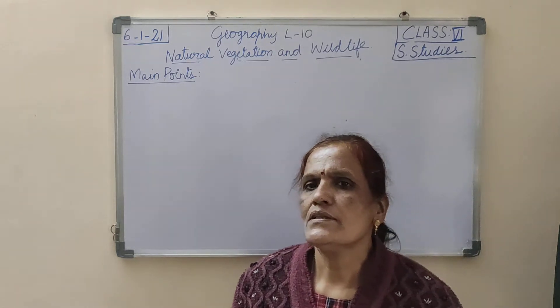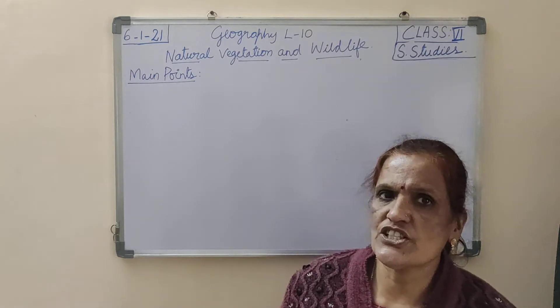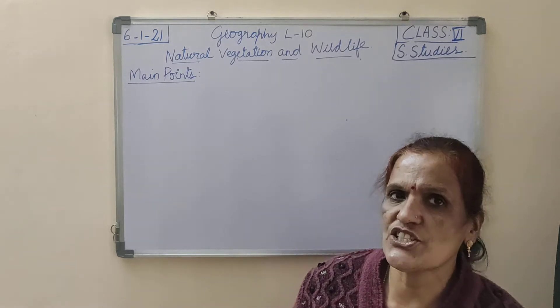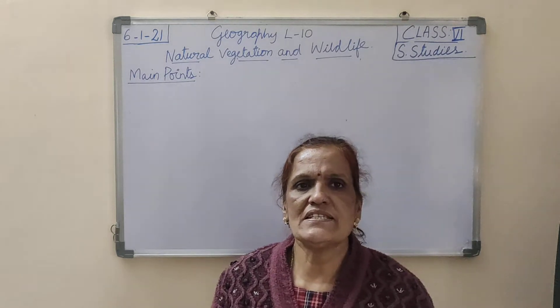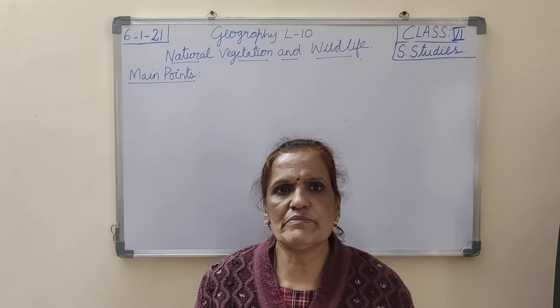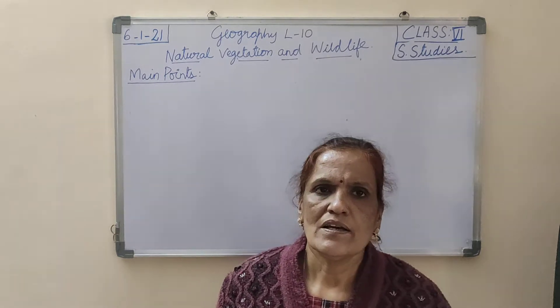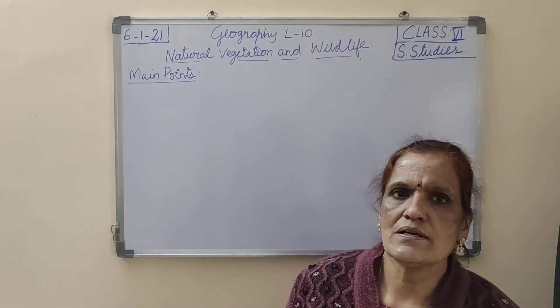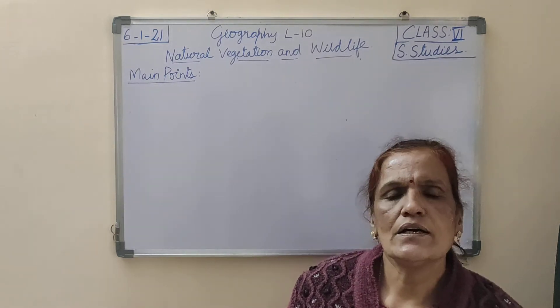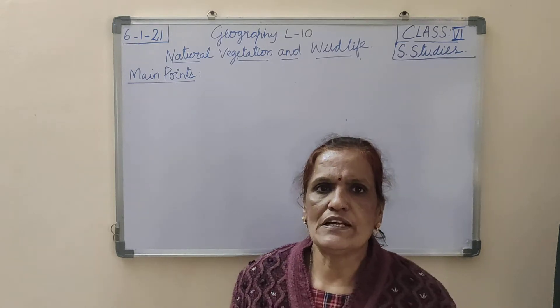Children, what is natural vegetation? What is vegetation? In simple words, vegetation means trees — trees which help us a lot in all fields.